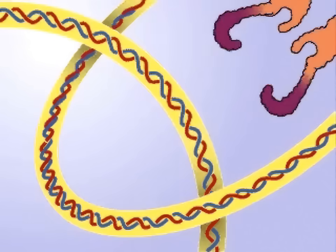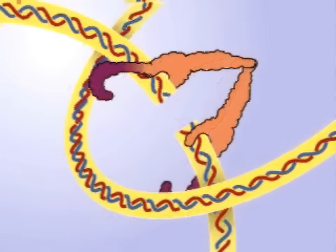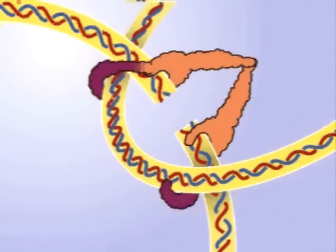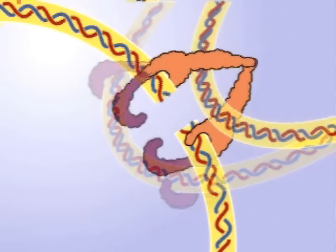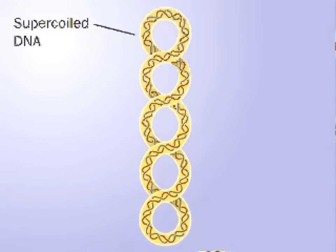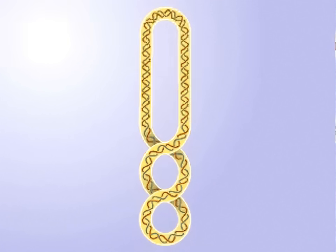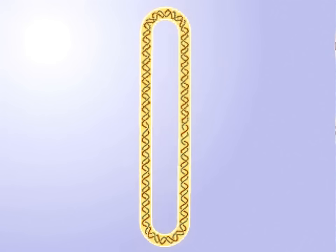Topoisomerase II enzymes do the same thing, but with both strands of the double helix. Topoisomerase II cuts both strands of a double-stranded DNA and passes another double strand through the break and then reseals the break. So if a molecule of DNA is supercoiled, topoisomerase II can remove the supercoiling, two twists at a time, to yield a relaxed circle.